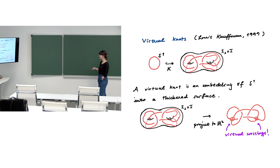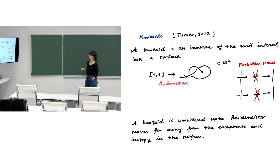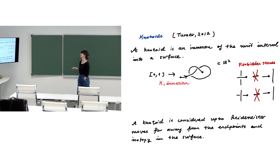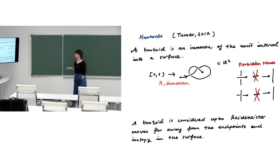We have many invariants for virtual knots. There are also other variants such as knotoids. The theory of knotoids was introduced by Turaev in 2012, pretty recently. We can define a knotoid as an open-ended knot diagram in a surface — here in the plane, or you can consider it in the two-sphere or some torus. Mathematically, we call a generic immersion of the unit interval into some two-dimensional manifold a knotoid.